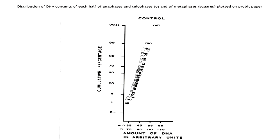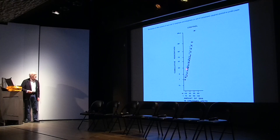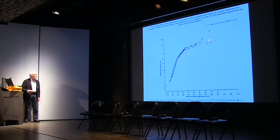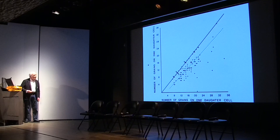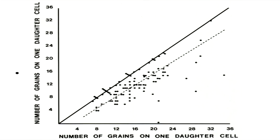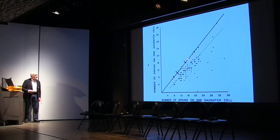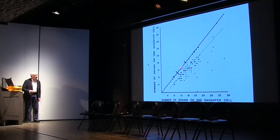A Gaussian distribution on probability paper presents a straight line, and this is so during most of the lifespan of the cells, but at the very end there is a phase transition and a break in the straight line, showing a chaotic separation of DNA between sister cells. We measured newly synthesized DNA after labeling, and this shows the number of grains on sister cells if the distribution is even, with a computer-calculated line showing significant deviations from the ideal distributions.